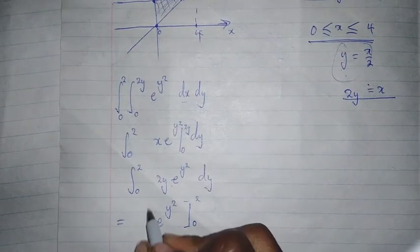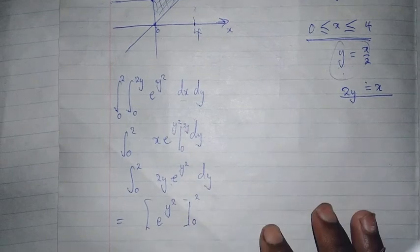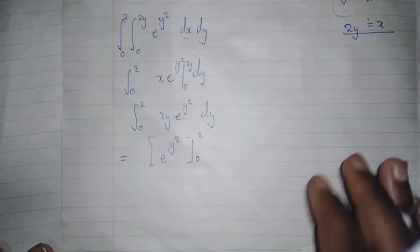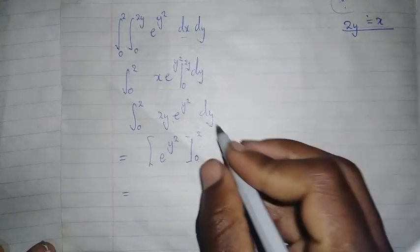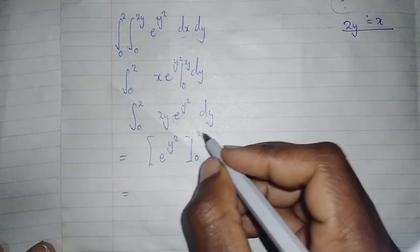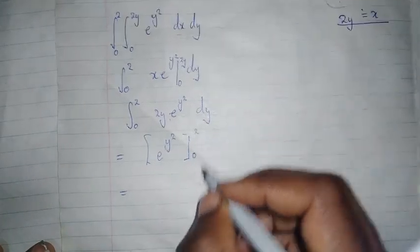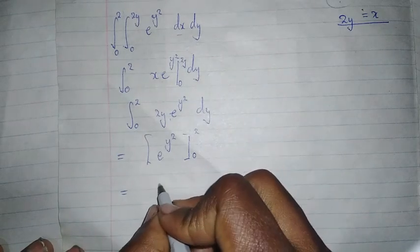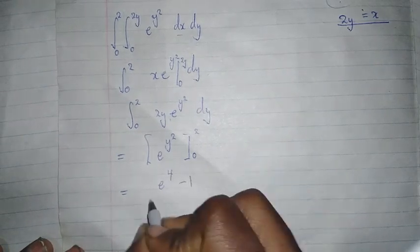If I place these limits, I'm going to get e to the power 4 minus 1.